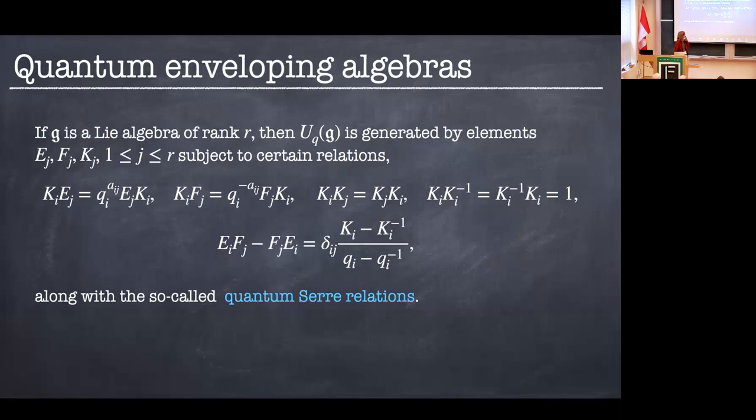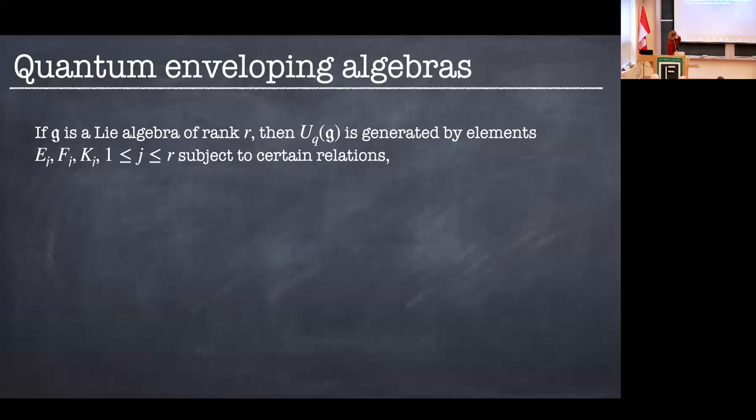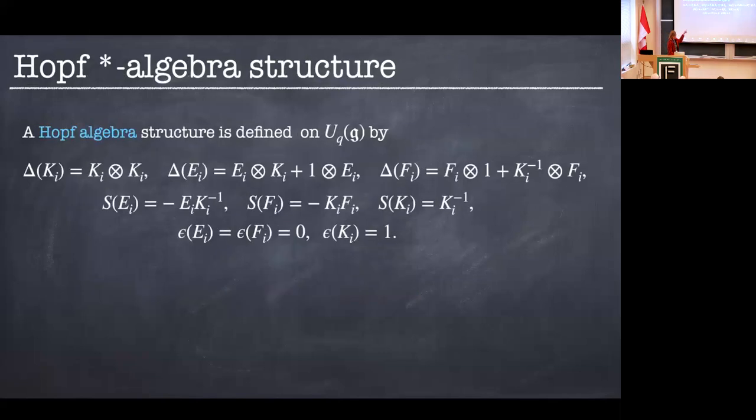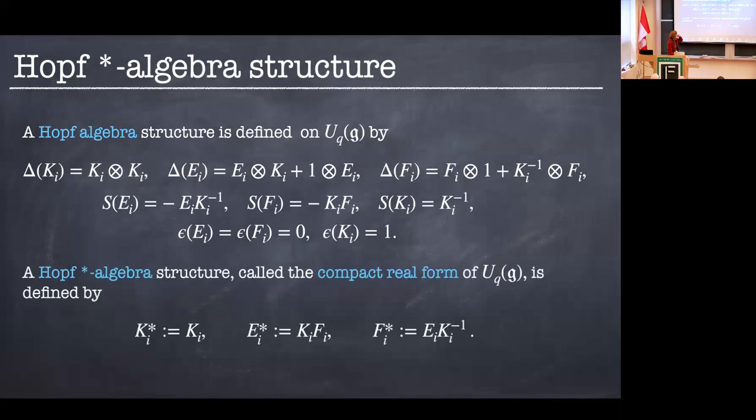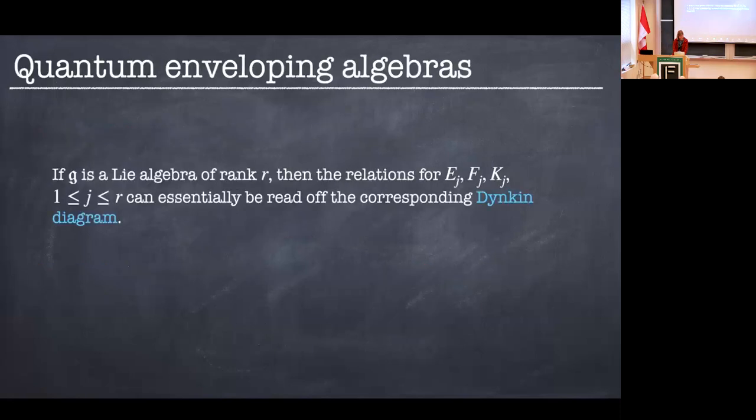Basically, it's the K sort of that is kind of messing things up in a sense. So this is sort of the thing that we're using to q deform. We don't have this maximal torus type thing anymore. We have these K instead. And then something called the quantum Serre relations, which I don't want to write down for you. So here is the Hopf algebra structure. Again, I don't expect you necessarily to take all this in. And one can also endow this with a star algebra structure. And then we think of this as the compact real form, given by setting the adjoints as such.